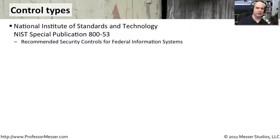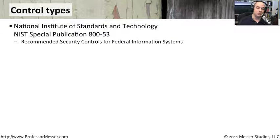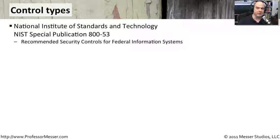A good place to start the conversation about risk is with control types. The National Institute of Standards and Technology is a federal organization in the United States that comes up with standards used not only for the federal government but also nationally and even worldwide. They have a set of standards called NIST Special Publication 800-53, a publication called the Recommended Security Controls for Federal Information Systems. Although the name says Federal Information Systems, there's information here that you could almost apply to anybody's organization.